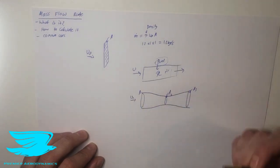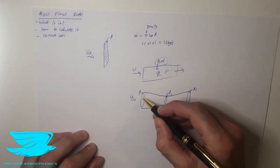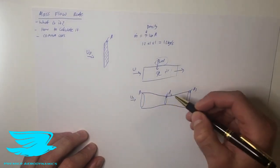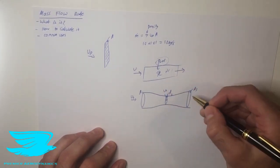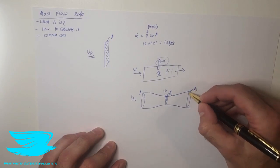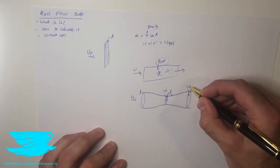So we have u1 coming in and as the cross-sectional area reduces, how can we tell what the velocity is at this point? What is u2? And what's equally important, if the area increases, how can we tell what u3 is?